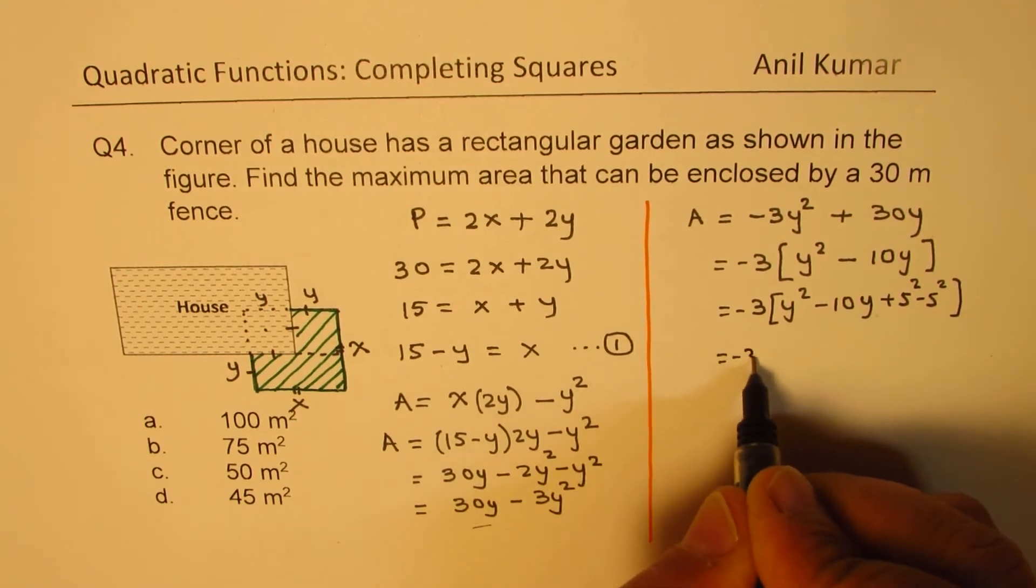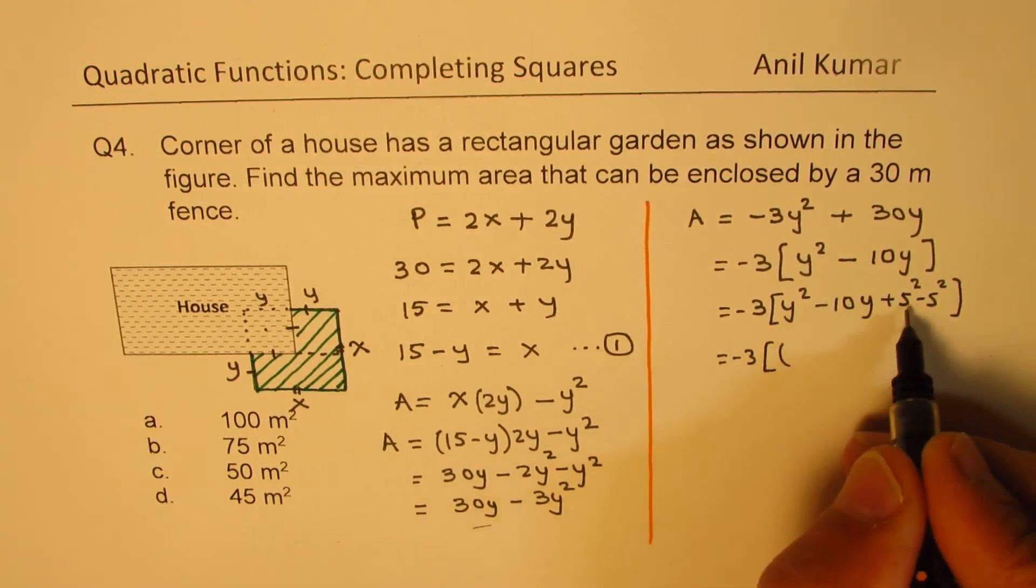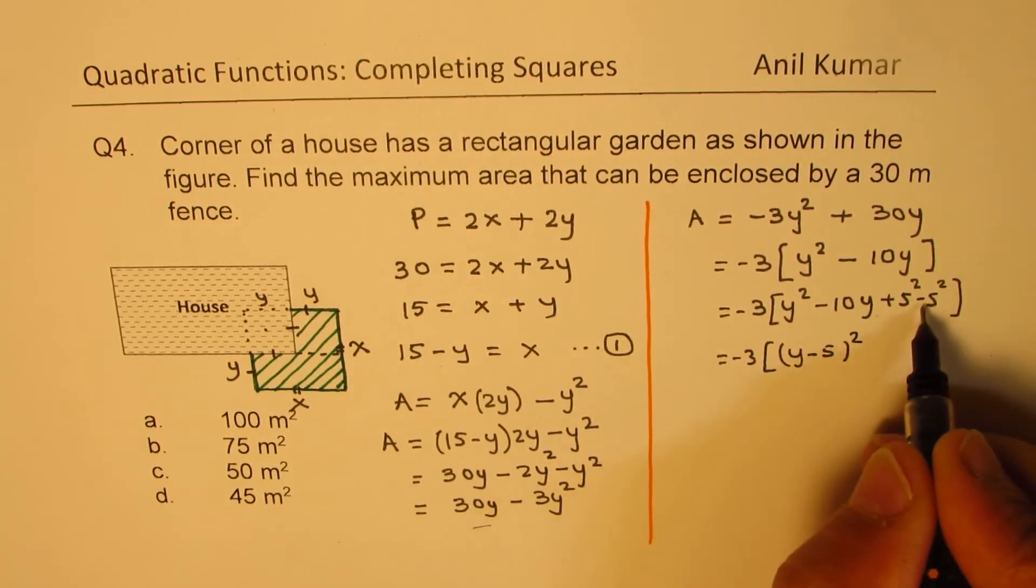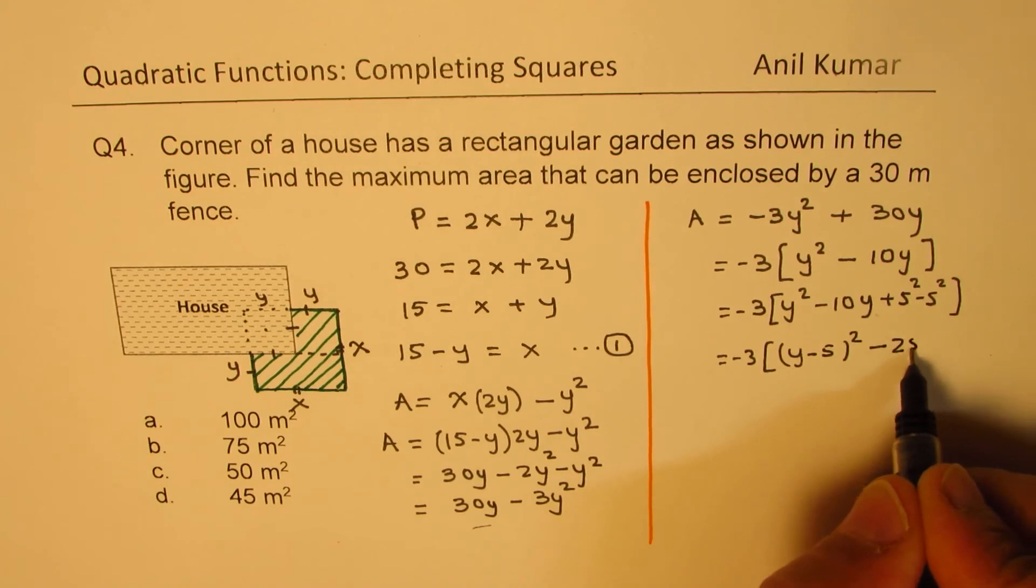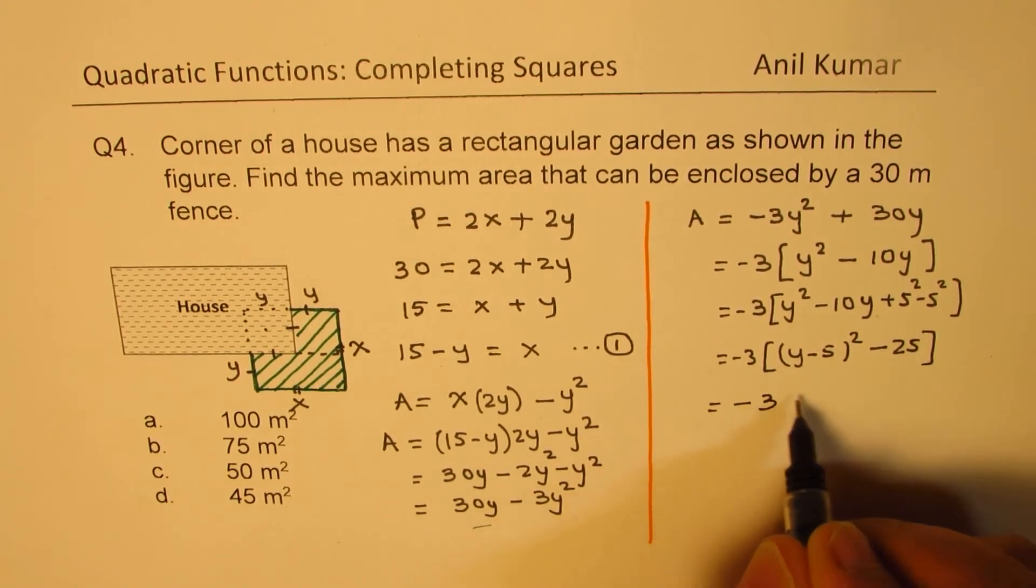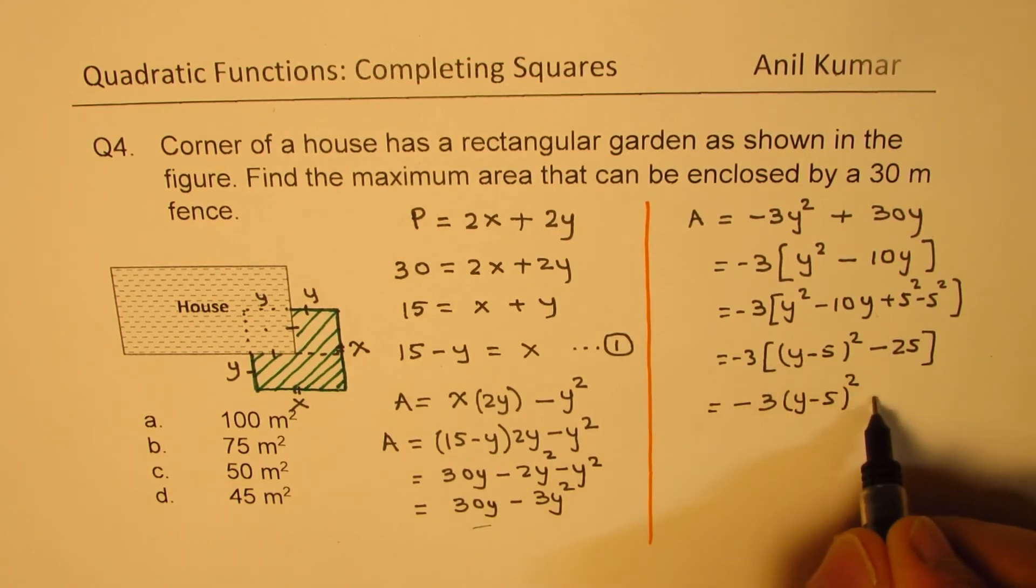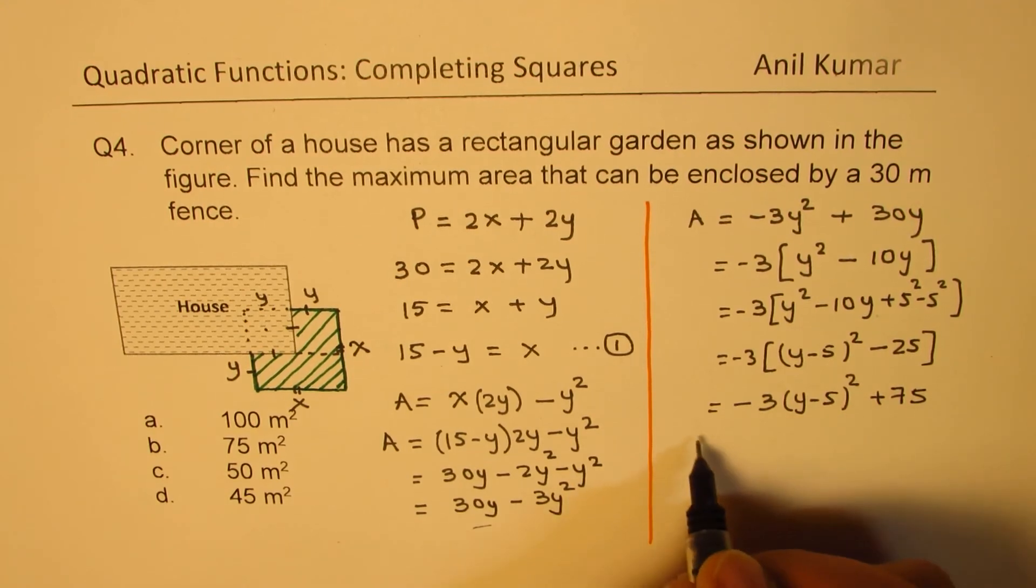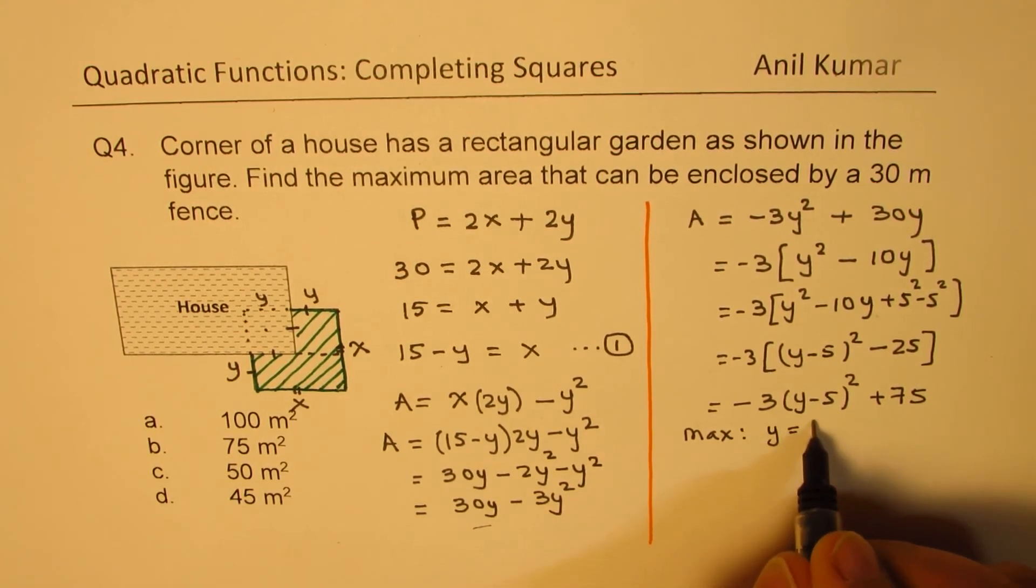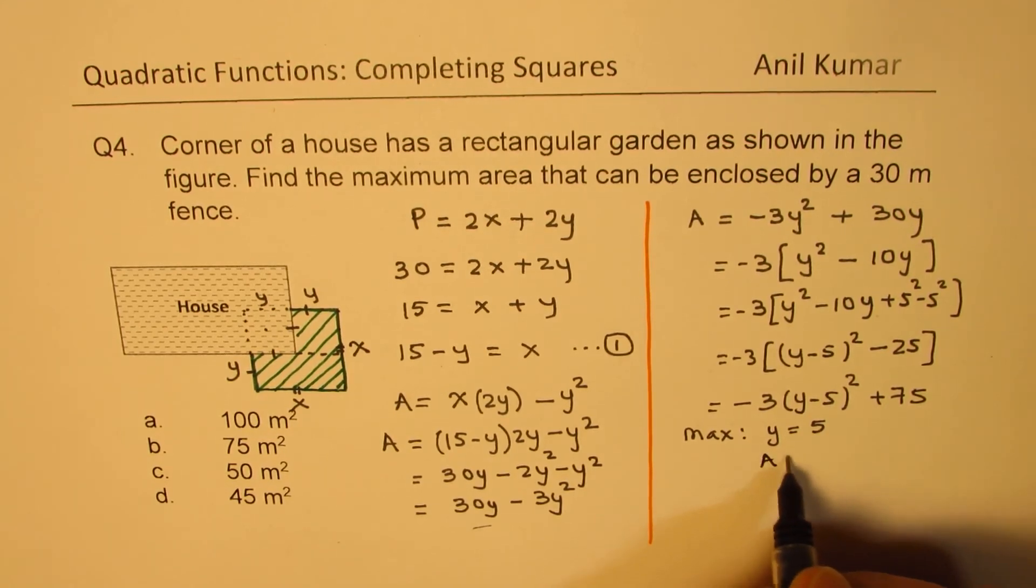This gives us three terms as a perfect square: (y - 5)² and this is minus 25, the square of 5. Opening the bracket we get -3(y - 5)² + 75.